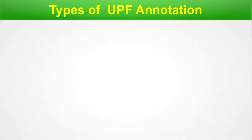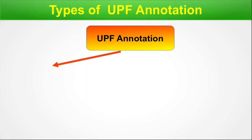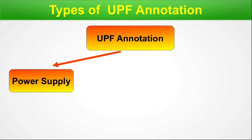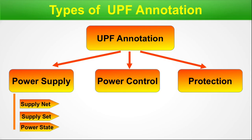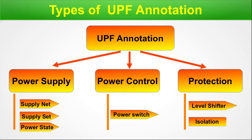Let's look at the types of UPF annotation. First is power supply, second is power control, and third is protection. Power supply is divided into supply net, supply set, and power state. Power control includes power switch. Protection can come from level shifters and isolation cells. These are power intent elements that are interweaved with standard cell distribution, having their own dedicated standard cells.